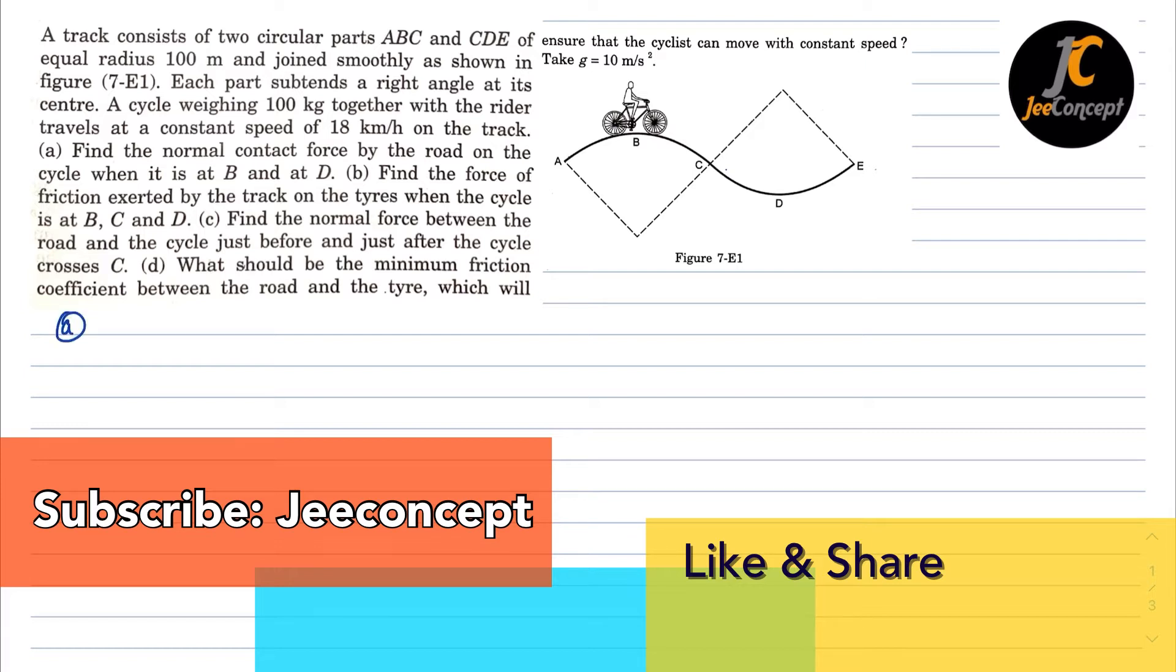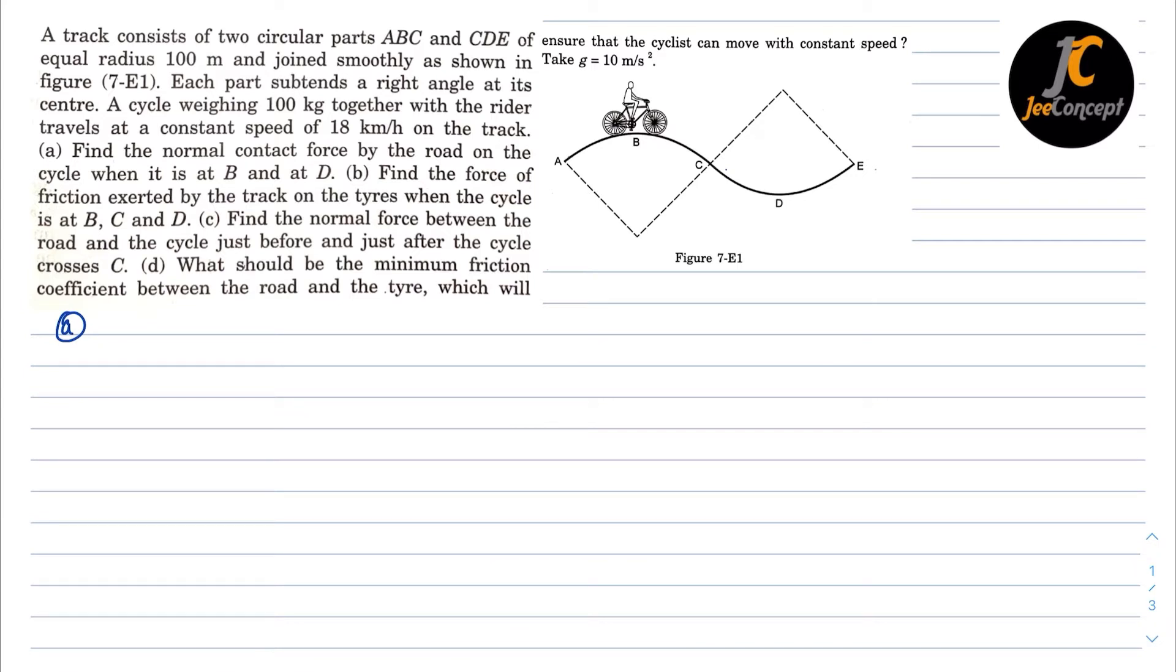So for part A, find the normal contact force by the road on the cycle when it is at B and D. So at this particular point, the MG force will act downward direction, MV square by R will act upward direction and normal force will also be in upward direction. So at point B, I'll write NB plus MV square by R should be equal to MG. Or I can say NB is equal to MG minus MV square by R.